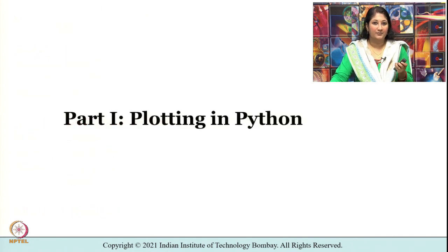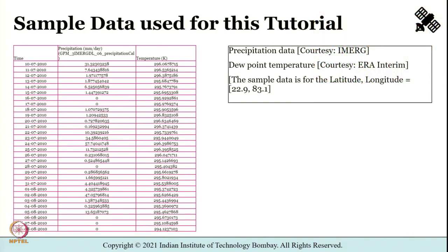Let us begin with part 1: plotting using Python. A few exercises in this tutorial use sample data comprising precipitation and temperature. The precipitation data is taken from IMARC — Integrated Multi-Satellite Retrievals for Global Precipitation Measurement Mission (GPM) — with units in millimeters per day. This is a multi-satellite precipitation product, and we shall cover more details about it in our lectures.